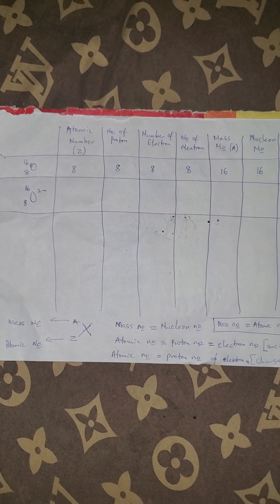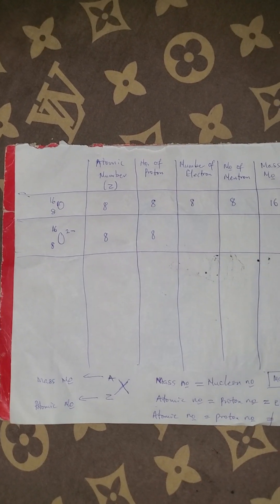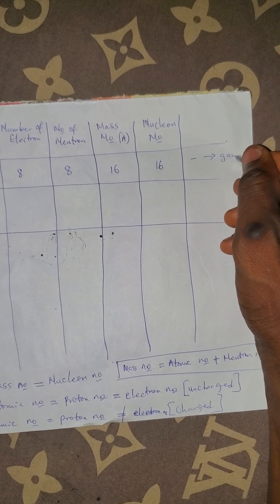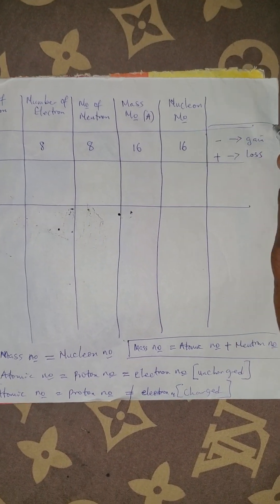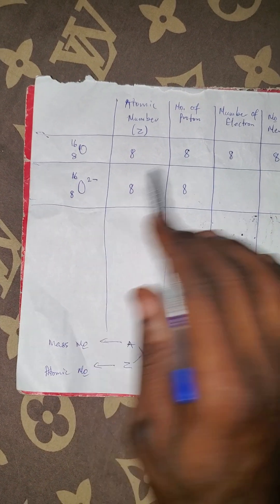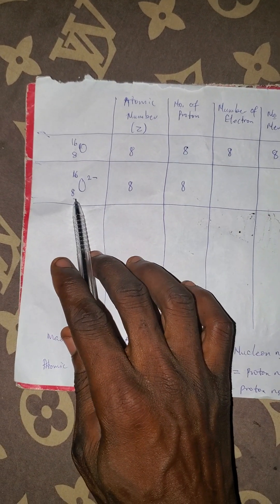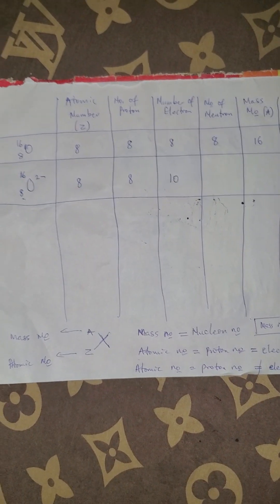Next, what if you have O-16 with a 2-minus charge? In this case, the atomic number is 8 and the proton number is also 8, but the electron number will not be 8 — it will be affected by the charge. Take note: in chemistry, minus means gain and plus means loss. This is the opposite of mathematics. So this atom with a 2-minus charge is going to gain two more electrons.